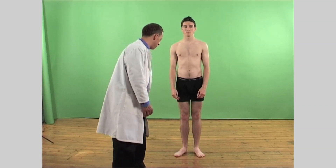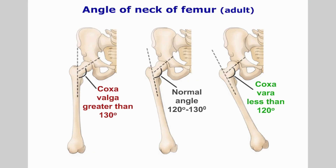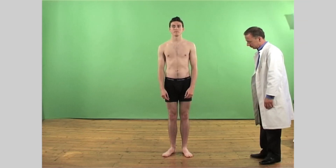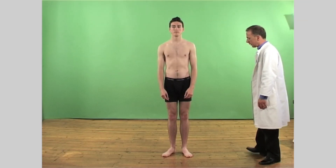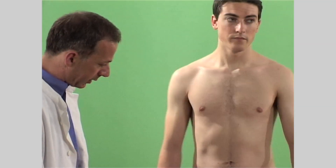Begin the examination of the hip with a general observation. Note any congenital or developmental abnormality like coxa vara, coxa valga, increased or decreased anteversion and leg length discrepancies. Note the pelvic and lumbar posture and decide whether these may be related to the hip, for instance due to a hip flexion contracture.